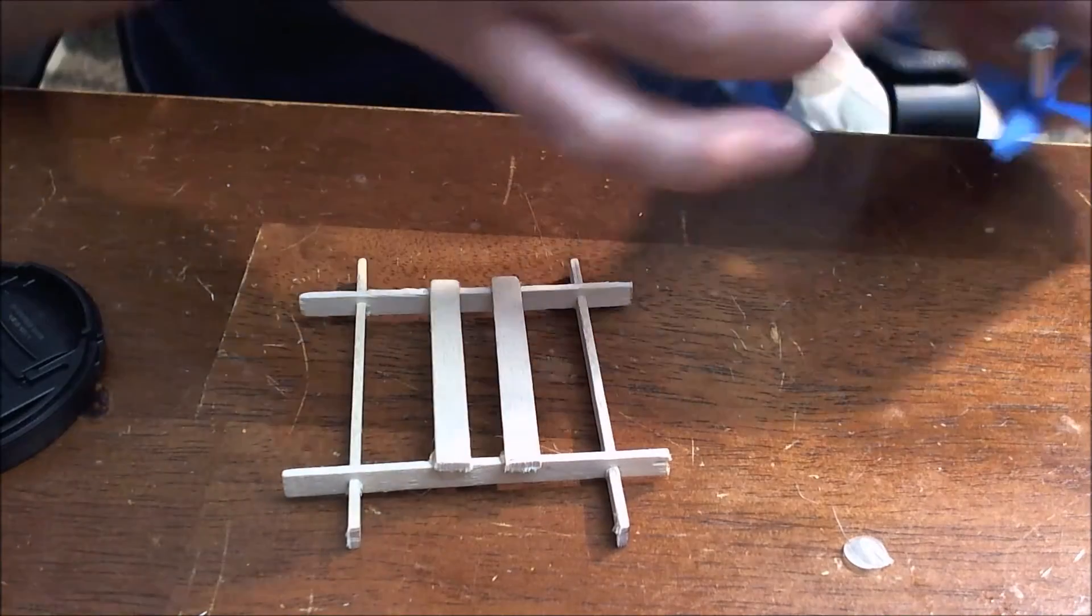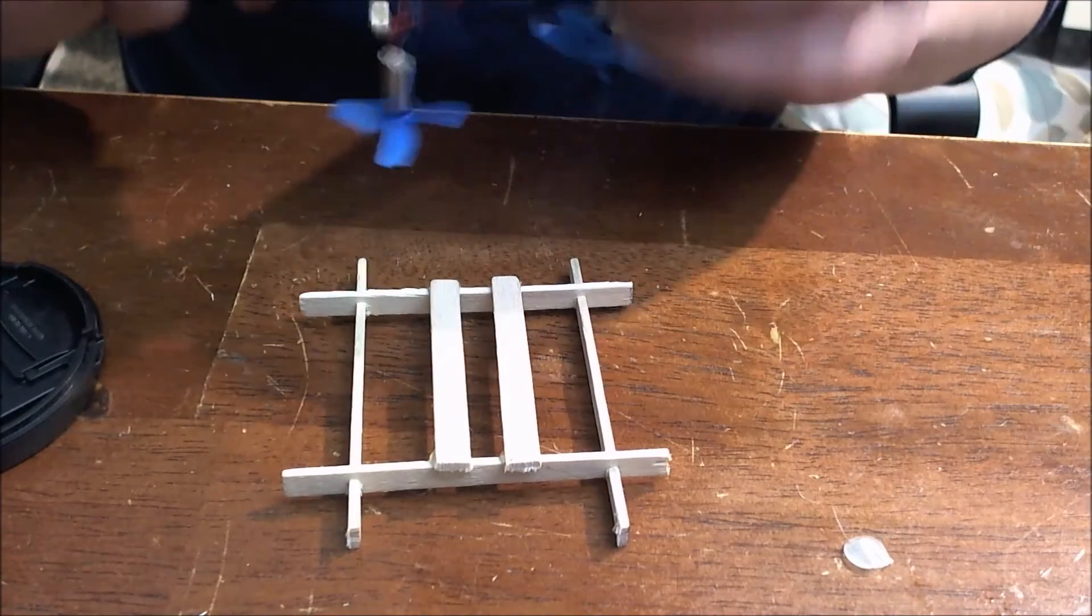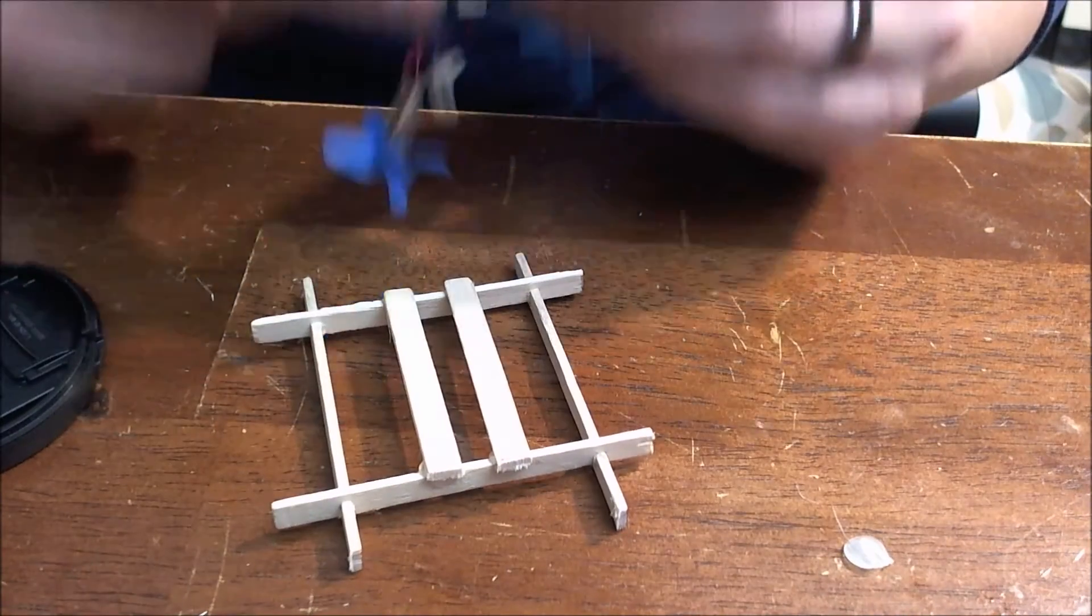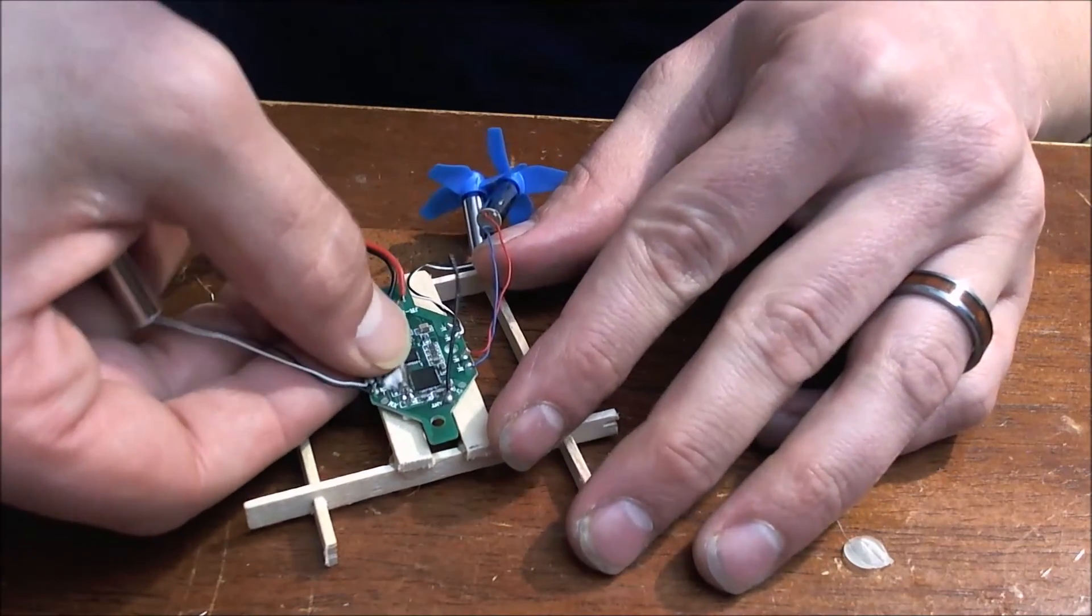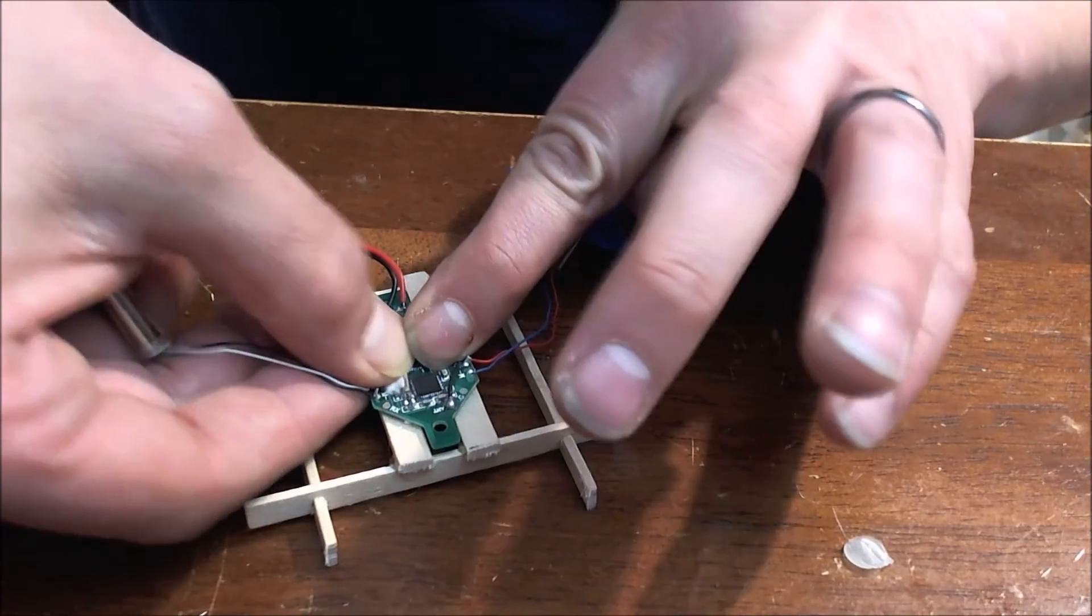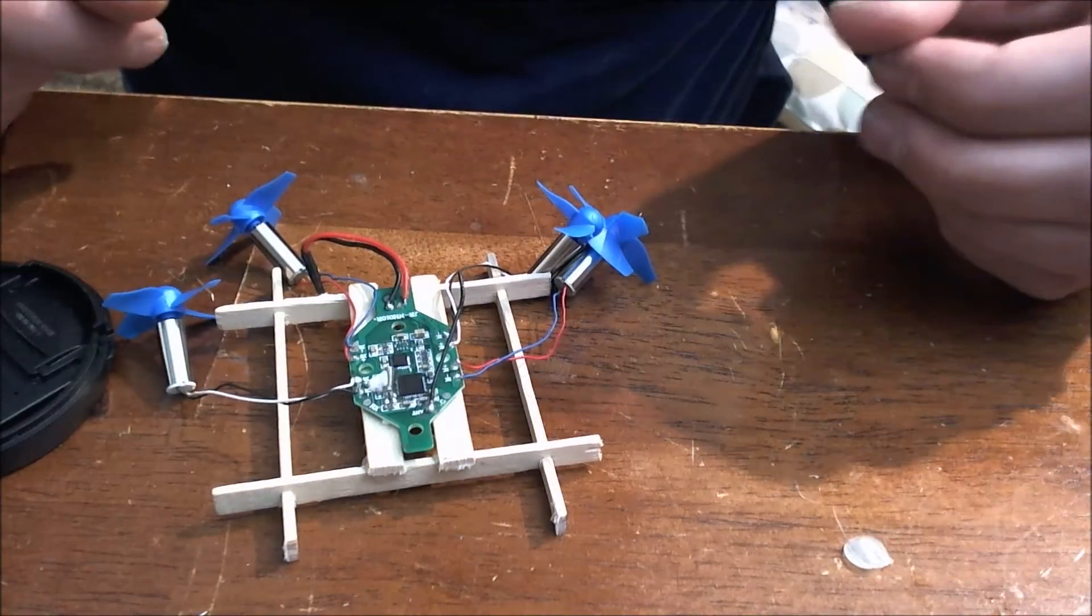Now we're going to mount our flight controller. I've got a piece of sticky tape. This is what I recommend. I wouldn't hot glue it to these pieces of wood because sometimes it holds so firm that it's very difficult to get apart.